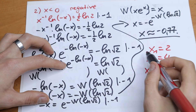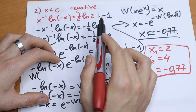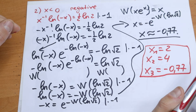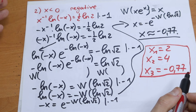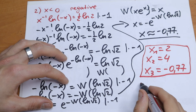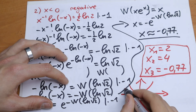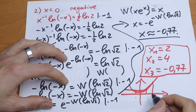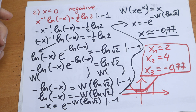So we have three solutions to that interesting exponential equation. On one side the equation looks easy, but on the other side it's a little hard — we need to remember or learn about the Lambert W function. Our three roots are x₁ = 2, x₂ = 4, and x₃ ≈ -0.77. The curves intersect exactly three times. If you like this solution or have any suggestion or question, write it in a comment. Thank you for watching and see you in the next videos.